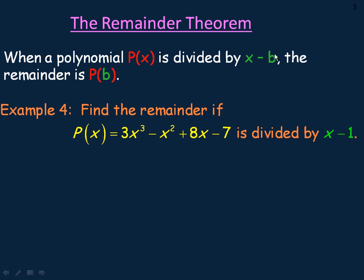That means if I substitute the value b—notice it's b not negative b, it's x minus the number—b in place of x, I actually get what the remainder would be if I divided x minus b into that original polynomial.